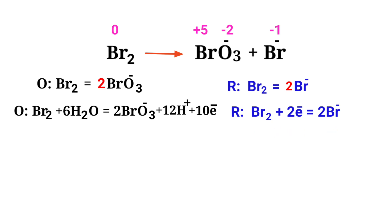The electrons lost in the oxidation half reaction must be equal to the electrons gained in the reduction half reaction. In the oxidation half reaction, there are 10 electrons present. But in the reduction half reaction, there are only 2 electrons present. To balance the number of electrons in the two half reactions, you can multiply the reduction half reaction by a coefficient of 5.